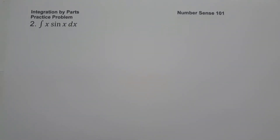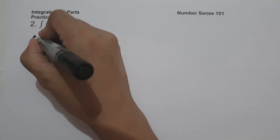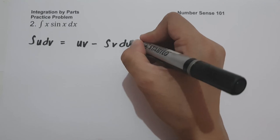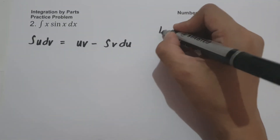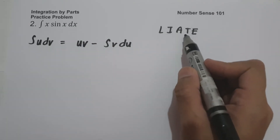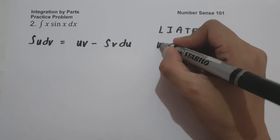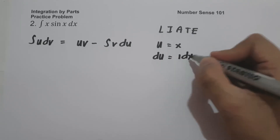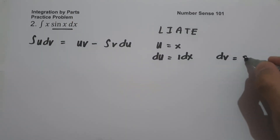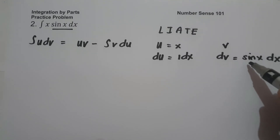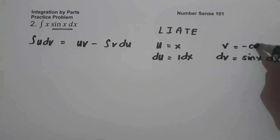On example number 2, what is the antiderivative of x sine x dx? Using the formula, the antiderivative of u dv equals uv minus the antiderivative of v du. Using LIATE, x is algebra and sine x is trigonometry, and algebra comes first before trigonometry, therefore u = x, du = 1 dx, and dv = sine x dx. The antiderivative of sine x dx is negative cosine x.